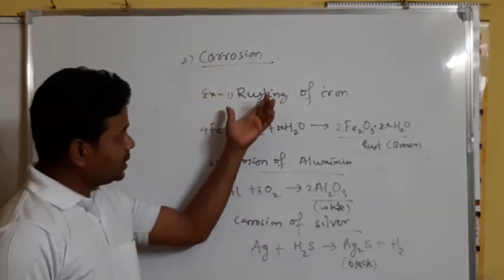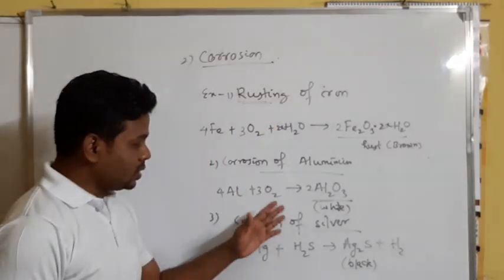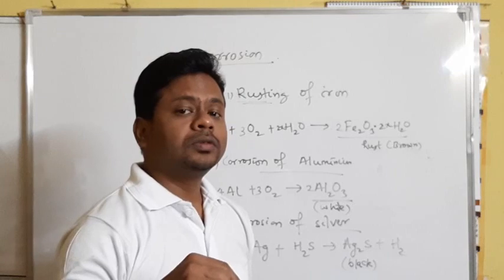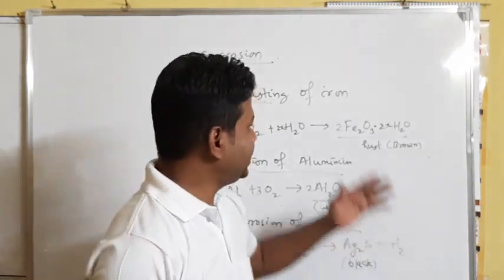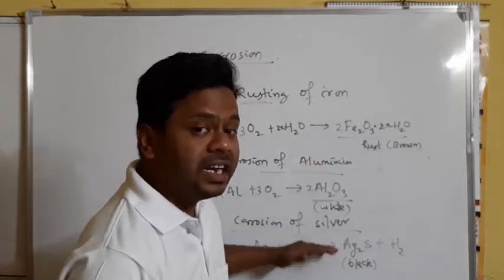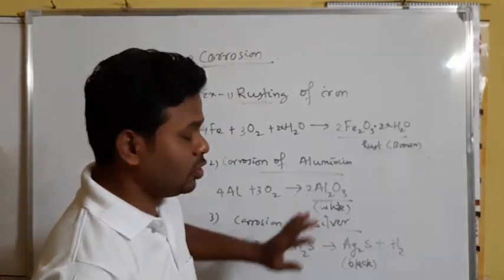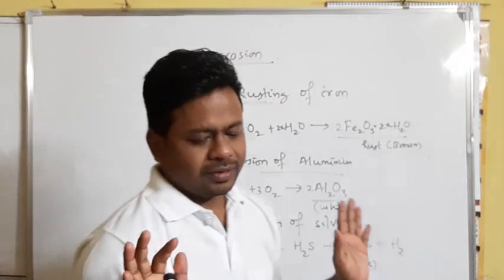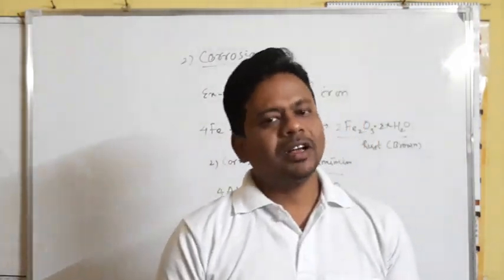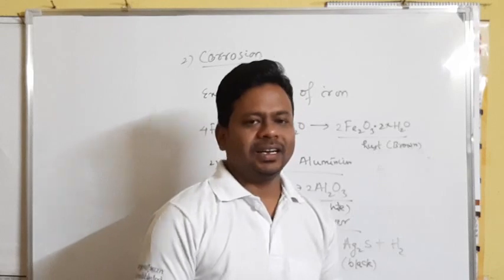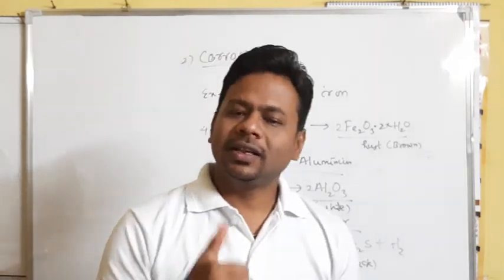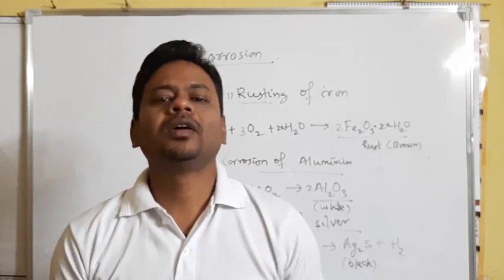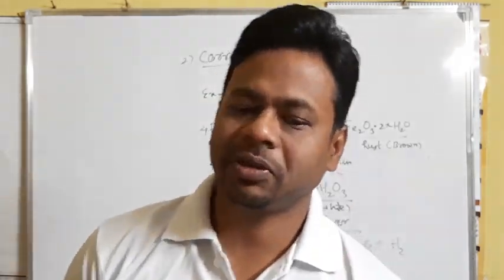Corrosion reactions are kept under the same category because all these reactions lead to loss of metal, making them undesirable. This is all about the first chapter — chemical reactions and equations. I hope you liked it and enjoyed it. If you like it, please share and subscribe for new videos on other chapters. Thank you very much.